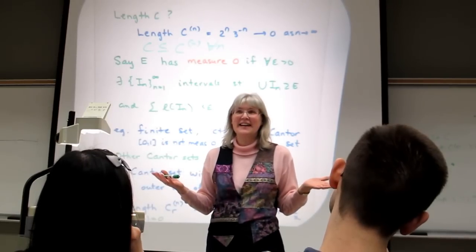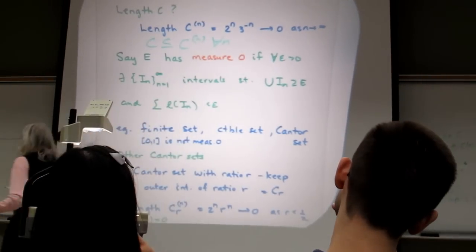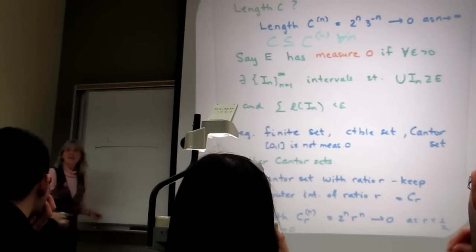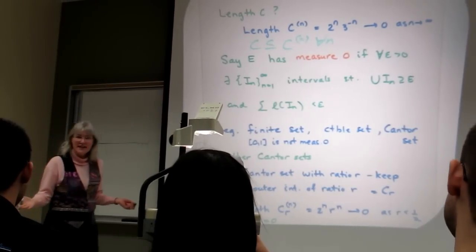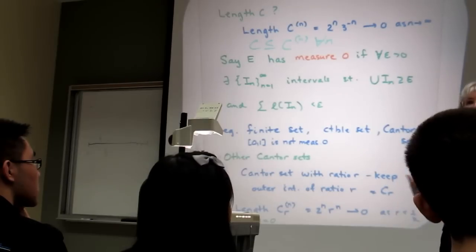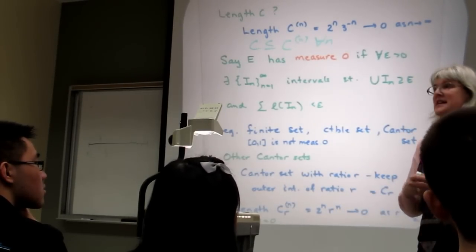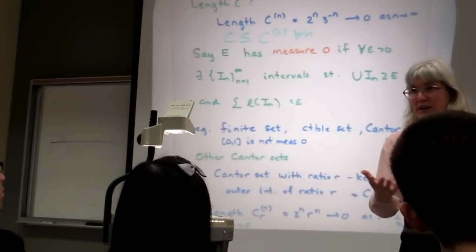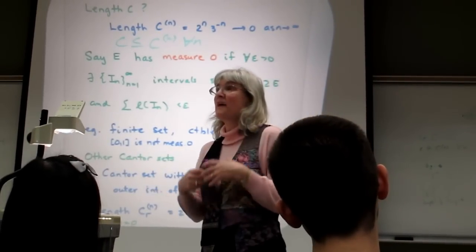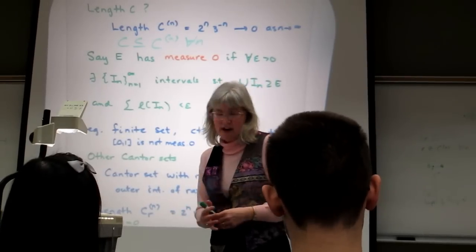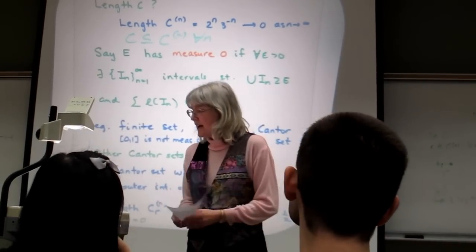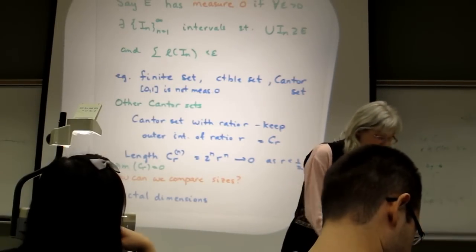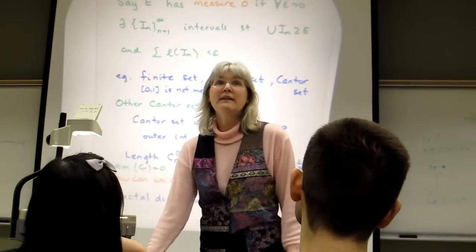All these sets have the same kind of construction — pull out a middle portion, keep two outer portions — so at step n they're made up of 2^n closed intervals of length r^n. These all have measure zero as well, because the total length at step n is at most 2^n · r^n = (2r)^n, and since r < 1/2, this goes to zero. All these sets are compact, perfect, totally disconnected, uncountable, and of measure zero. So how do we distinguish their sizes?